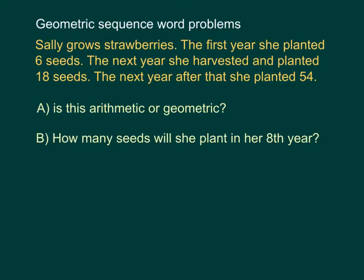The first year she plants six seeds. The next year she harvests and plants 18 seeds. The next year after that she plants 54 seeds.